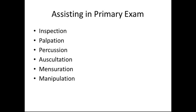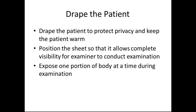Auscultation involves listening to the heart and lungs. Measuration includes height, weight, and sometimes range of motion and the angles of joints. Manipulation refers to assessing range of motion — how well a joint moves — using terms like extension or flexion. For draping, position the sheet to allow complete visibility for the examiner while protecting patient privacy and warmth, exposing one portion of the body at a time to maintain patient comfort and build trust.